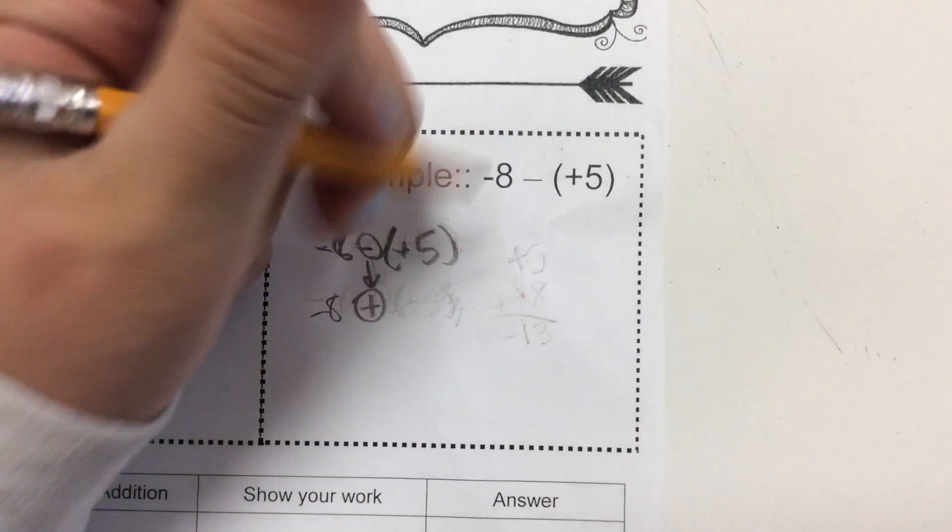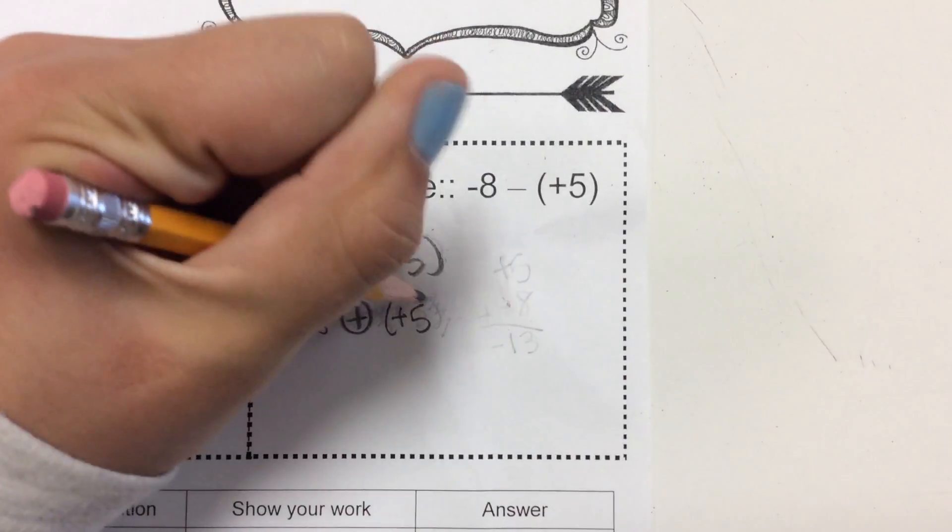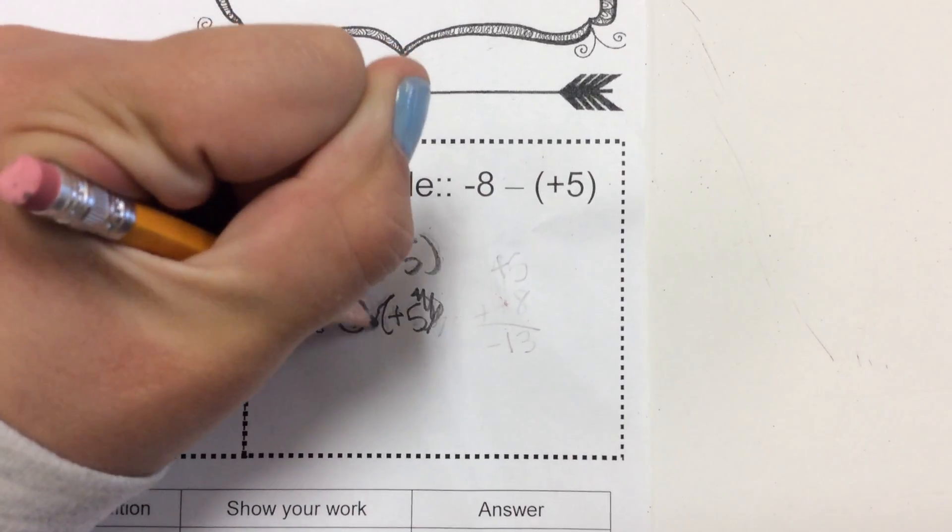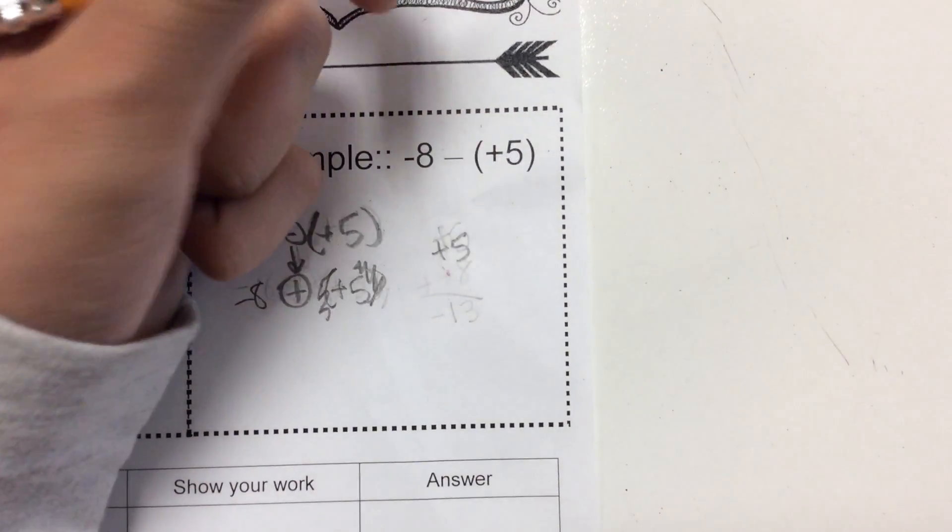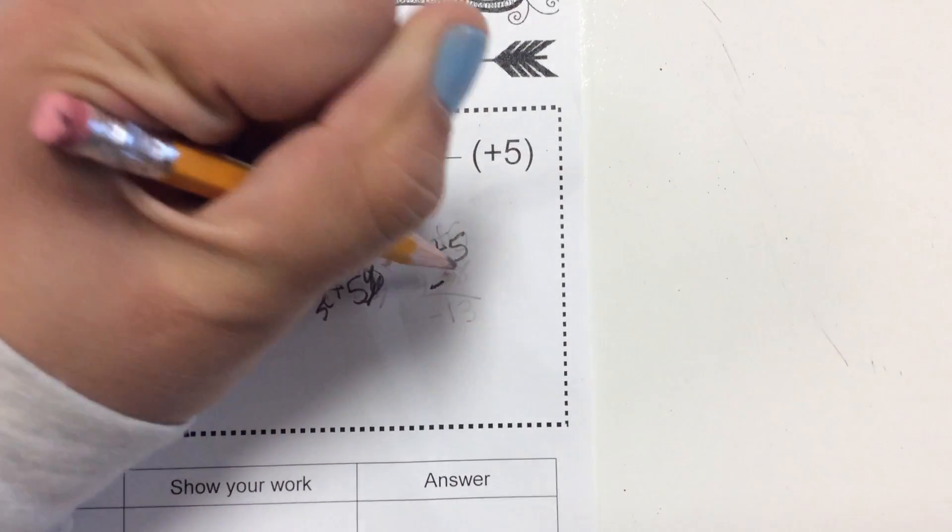So, it's going to be negative eight plus five. But these parentheses don't matter. So, if you write it out like this, or you can do it any way you want with addition, it doesn't really matter which way it is.